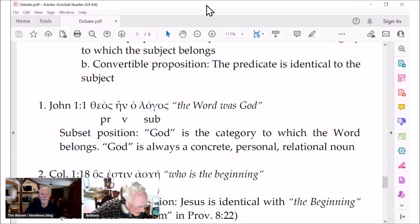In the subset position in this predicate nominative construction, God is the category to which the word belongs. Of course, but it's not another person than God. You're making that slip. You're missing my point. I think you're missing my point, Anthony. You're saying that in the beginning was the second member, not of a trinity. No, I'm not. You're saying it was Jesus, though. In the beginning was Jesus.